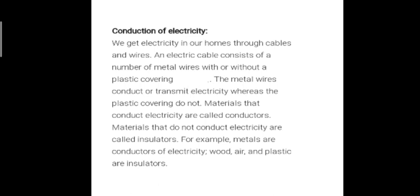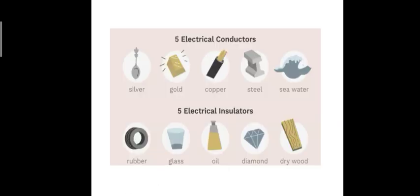The next property is conduction of electricity. Not all materials can conduct electricity — for example, plastic cannot conduct electricity. Metal wires, however, can conduct electricity. Materials which can conduct electricity are called conductors, and materials which cannot are called insulators. Metals are very good conductors of electricity, with copper being the best example. Wood, air, and plastic are examples of insulators.